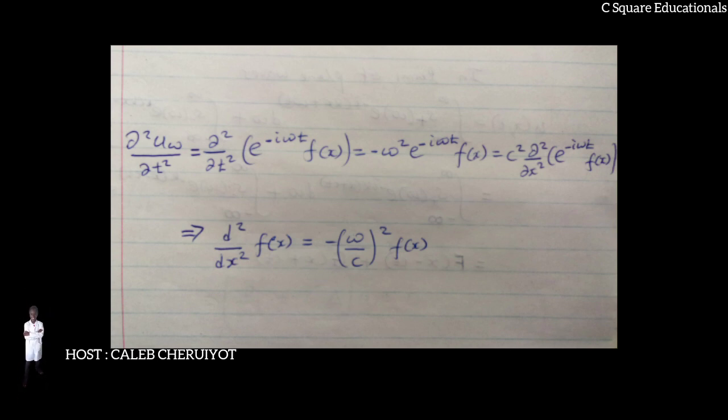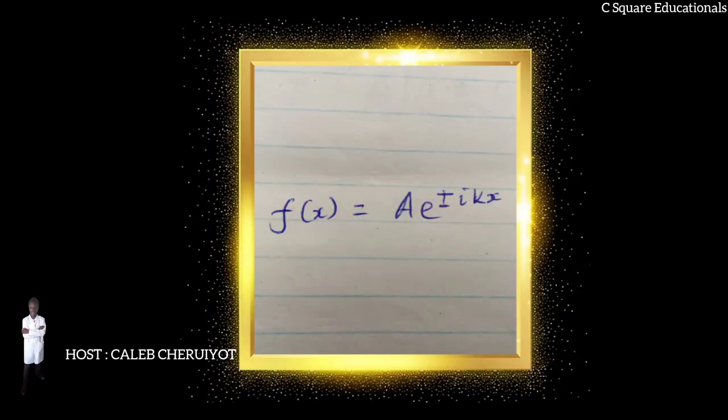It has the well-known plane wave solutions, so F(x) = Ae^(±ikx), with the wave number k = ω/c.